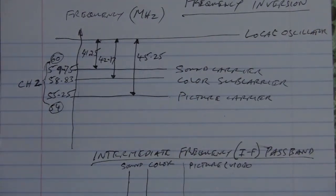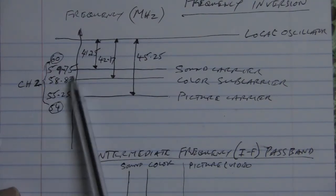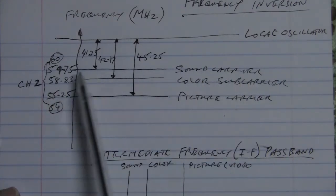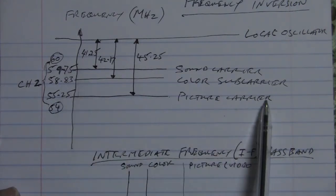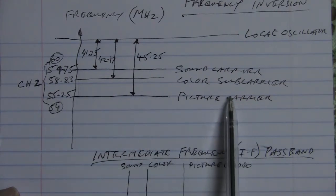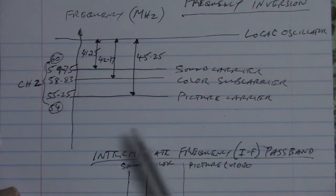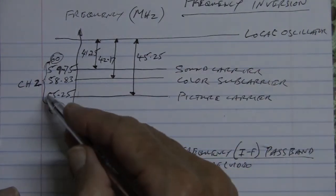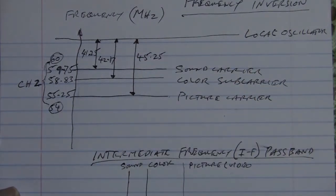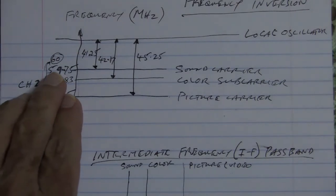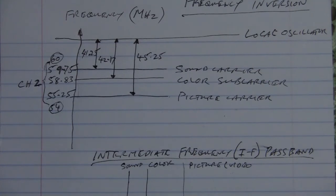Why is this an example of frequency inversion? Well, when we invert something we turn it around. In the original transmission the sound carrier was highest in frequency and the picture carrier was lowest in frequency. But in the intermediate frequency plot, the sound carrier is now lowest in frequency and the picture carrier, which was lowest, is now highest in frequency. That is a complete inversion — a reversal — of the frequency band; we've turned the passband upside down.